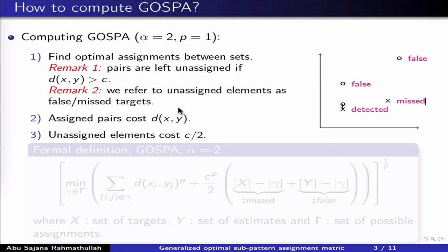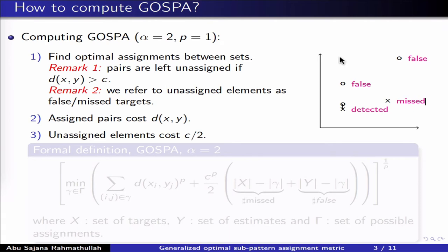Let us explain how to use GASPA in more detail. We do so for alpha equal to 2, which is the recommended choice of this parameter, and use p equal to 1 in this description, even though the main steps are the same for other values of p. The first step is to find an optimal assignment between the vectors in the two sets, while leaving pairs unassigned if the distance d between the two vectors is larger than c. Here d is some metric for vectors — it could be, for instance, the L2 metric. In this example, c has been selected such that the only assignment is the pair down here; the other vectors are therefore unassigned. We say that any unassigned elements are false or missed targets: an unassigned vector in the set of true targets is missed, whereas an unassigned element in the set of target estimates is a false target estimate.